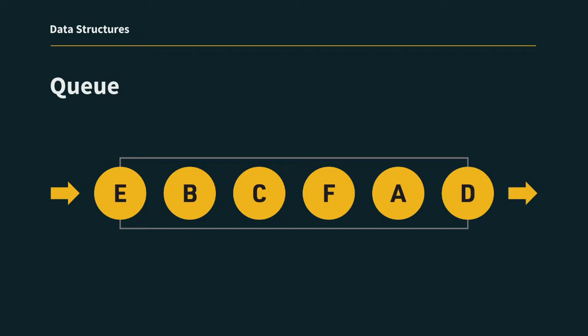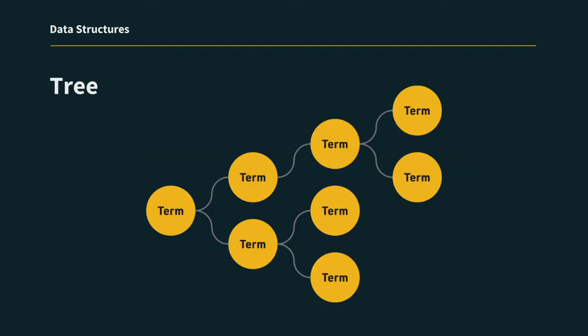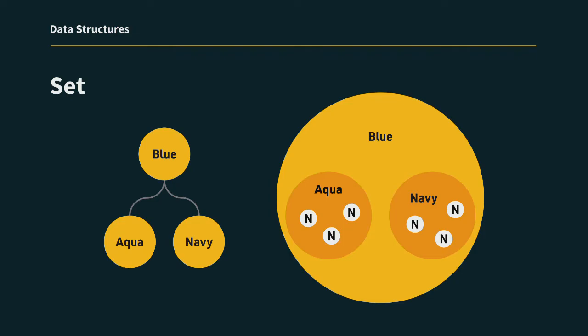Queues are interesting in that they're like a list except the order isn't defined by the entities within the list — it's defined by the time they go into the queue. We have trees, which we see in taxonomy. And we have sets: you can take blue and say aqua and navy are members of a taxonomy tree, tag nodes, and say those nodes are members of the set aqua but also members of the set blue. You can do the union, difference, or intersection of those things using taxonomy trees. A node doesn't know the other nodes in its set, but it knows it belongs to the group blue.